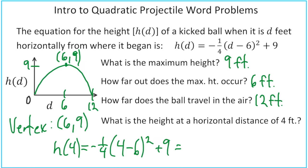And that's a negative times a positive, so we could end up with negative 1 plus 9, and the positives are winning by 8. So the height at a horizontal distance of 4 feet would be 8 feet. And that concludes our intro video to quadratic projectile word problems.